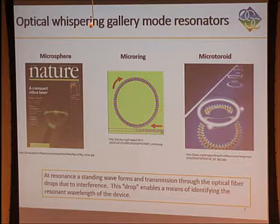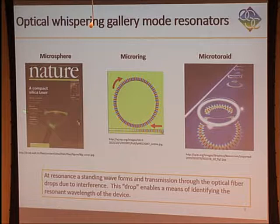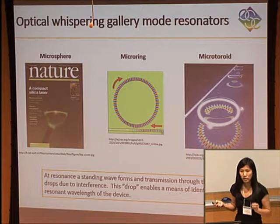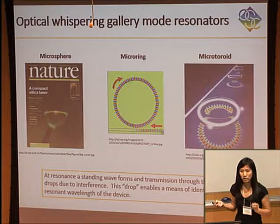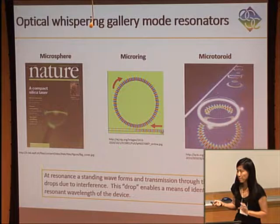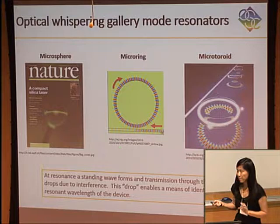There are many different examples of whispering gallery mode resonators. A microsphere is formed by melting the end of an optical fiber so that surface tension causes a very smooth sphere to develop. This has been doped with the rare earth element erbium so that you can see light orbiting within the sphere. Light is coupled into these devices using a waveguide or optical fiber. This is a simulation of a microring — the red arrow indicates the direction of light, which is evanescently coupled. The bright colors represent the electric field inside these devices. You put a photodetector at the end of the waveguide — at the resonance frequency, light enters the device, you get constructive amplification inside, and when it exits it destructively interferes with light going through the waveguide. This drop in intensity is how we monitor the resonance frequency of these cavities, and when molecules bind it changes the frequency at which these devices resonate.